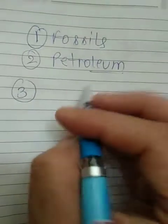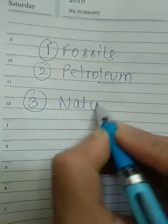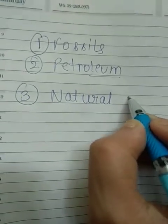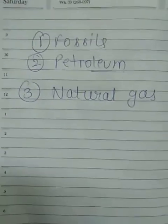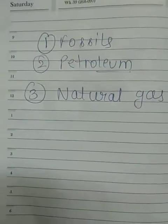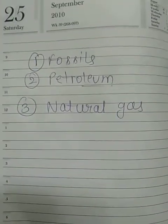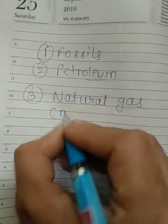Natural gas is another natural resource. It is a gaseous fossil fuel consisting mainly of methane. When we extract petroleum from rocks, natural gas is also present along with it. Methane is the main constituent of natural gas.